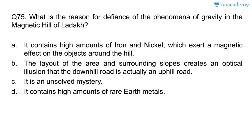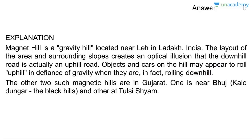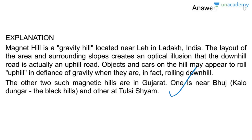Last question for this lesson: what is the reason for the defiance of gravity at the Magnetic Hill of Ladakh? The layout of the area and surrounding slopes create an optical illusion — a downhill road appears to be an uphill road. The Magnet Hill is located near Leh in Ladakh. Objects and cars appear to roll uphill but are actually rolling downhill. Two other such magnetic hills in Gujarat are near Bhuj at Kalo Dungar (the Black Hills), and another at Tulsi Shyam.